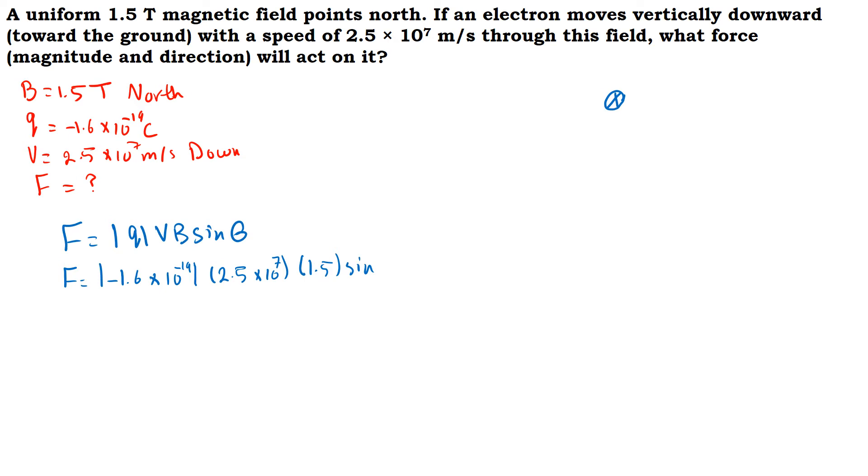What is the angle between the direction of motion and the magnetic field? The direction of motion, which is V, is down. When we say down it means into the page, so this is the direction of motion. And the magnetic field is toward north, so it is going this way. Then the angle is 90 degrees.